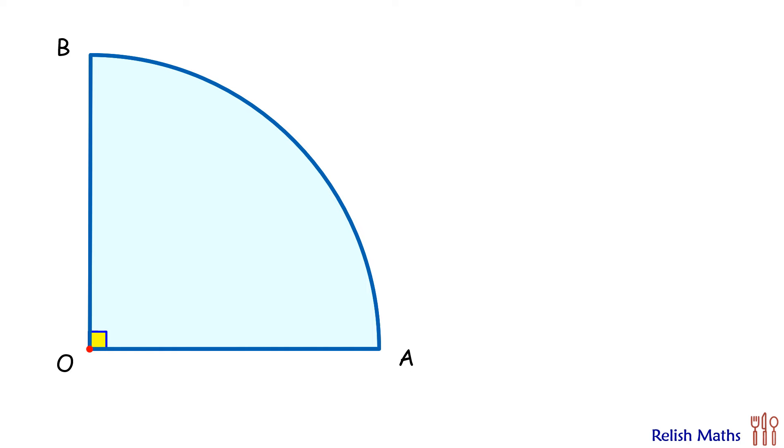Today's question is about a quadrant with radius 4 cm. On the arc AB we have two points C and D which are dividing this arc in three equal parts.